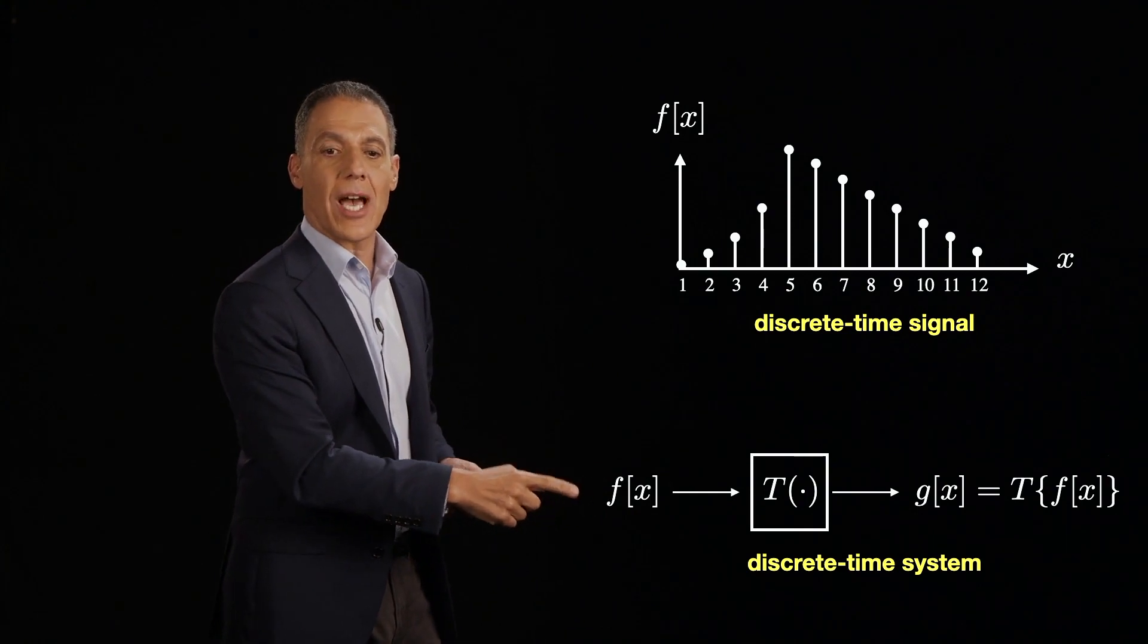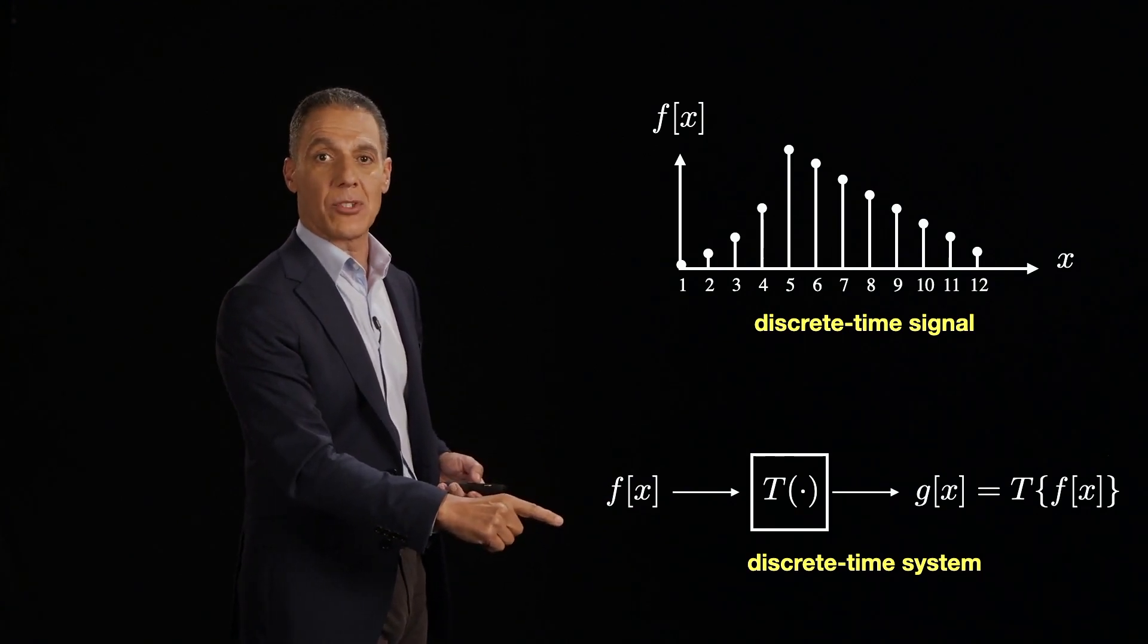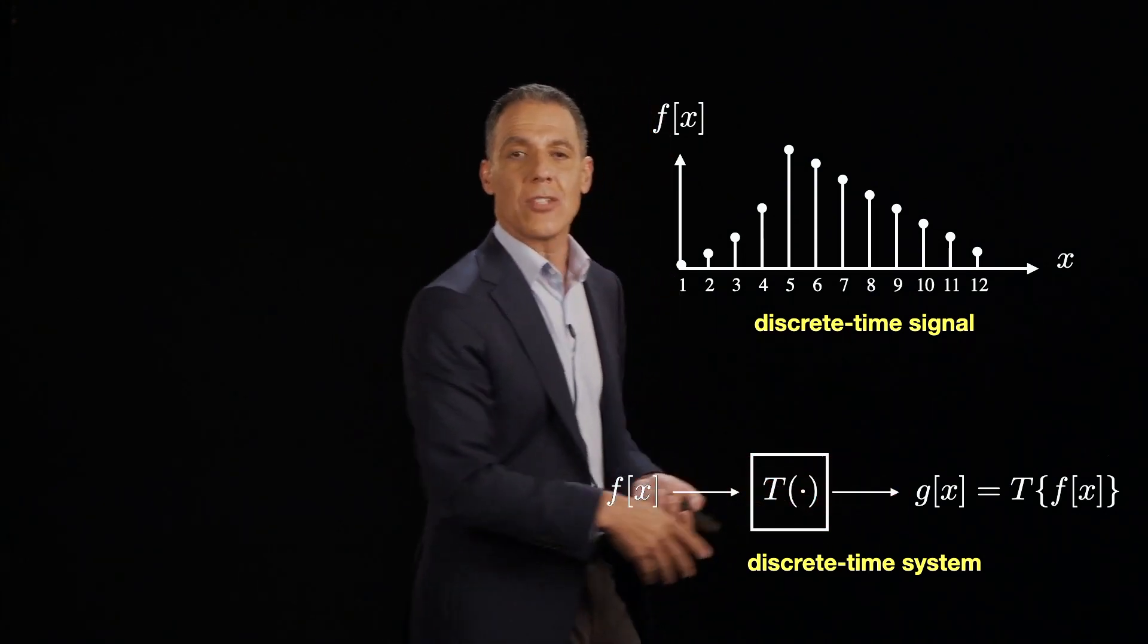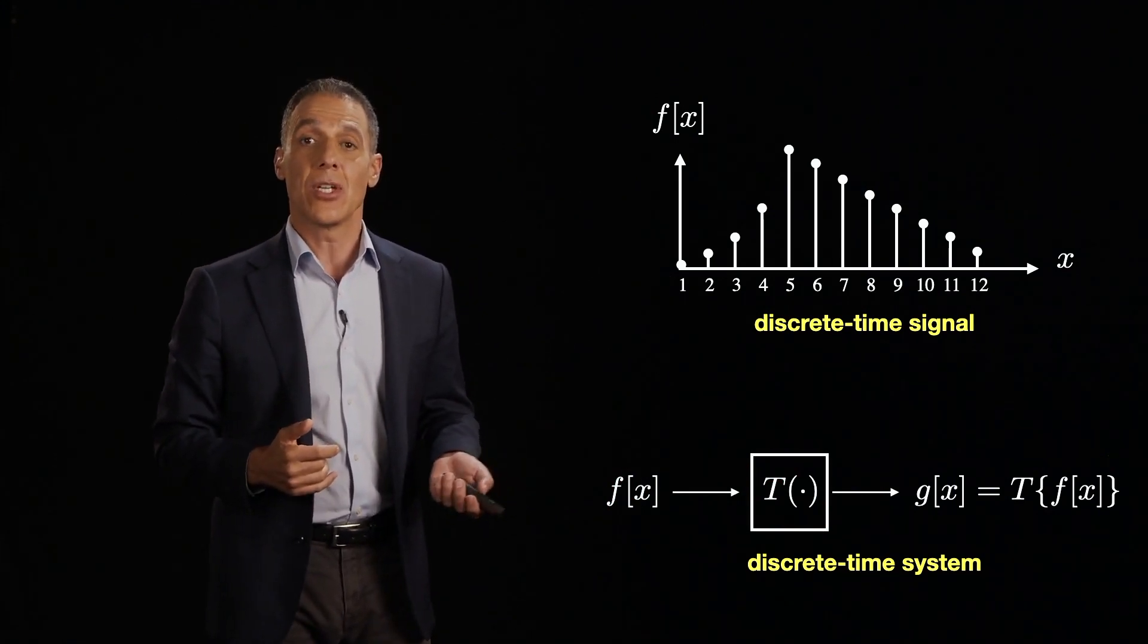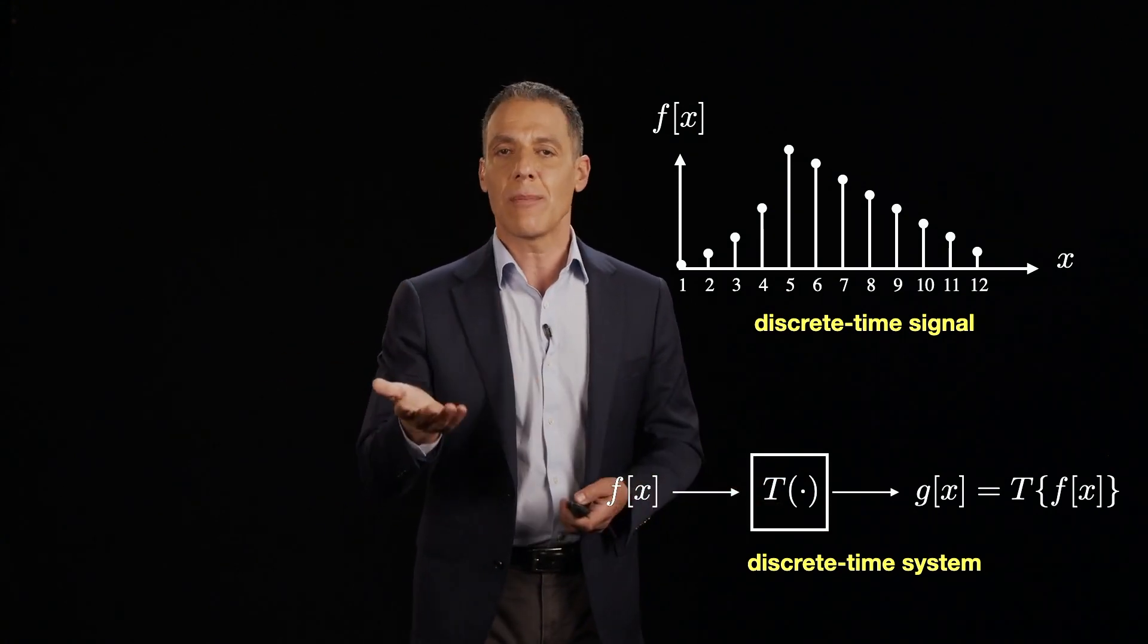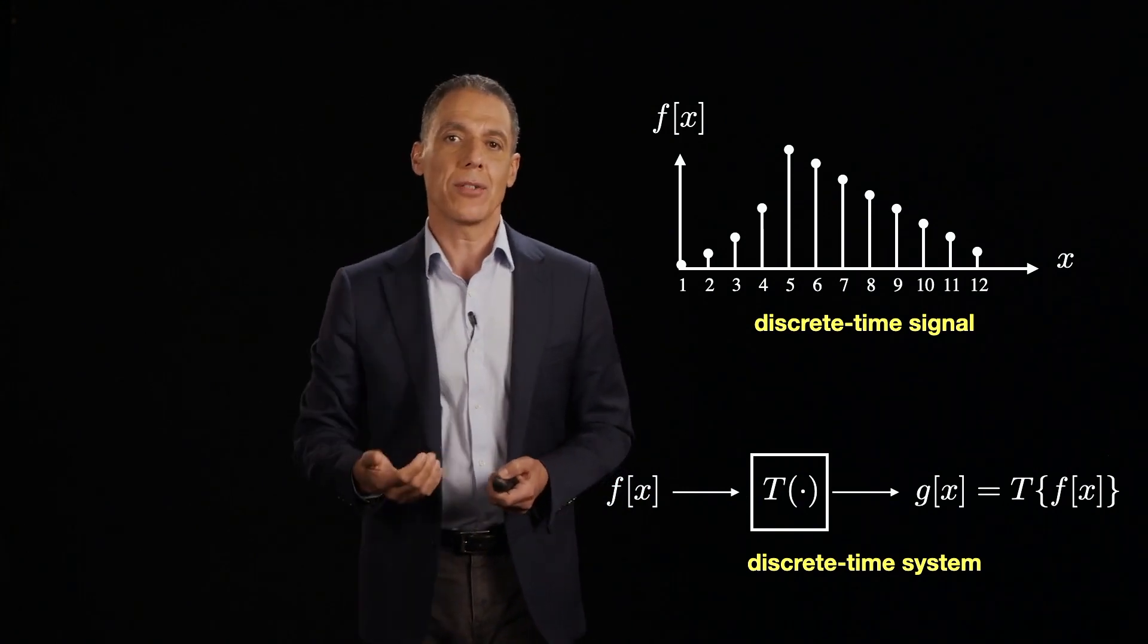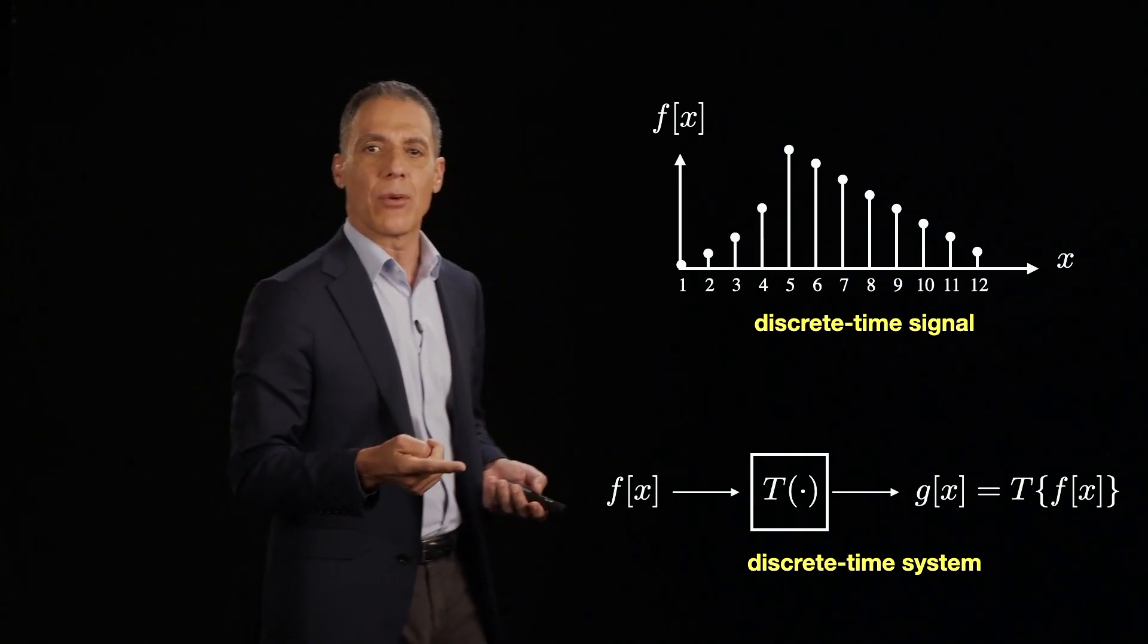We're going to push it through some computer vision system. And we're going to talk about those. In particular, we're going to talk about discrete time systems. And what a discrete time system does is it takes as input a discrete time signal f of x. Here's my discrete time system rather T. And it outputs another discrete time signal. So it transforms in some way the signal or the image. We've actually already seen a couple of these.